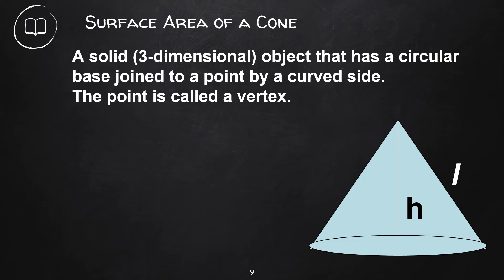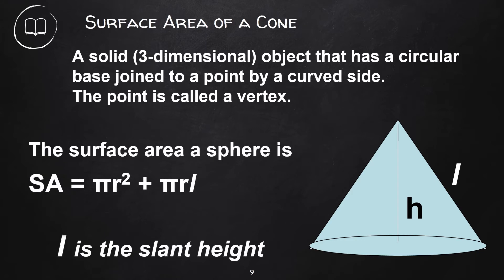The surface area of a cone is πr² + πrl. L is the slant height. H represents the height of the cone. The height of a cone is from the vertex perpendicular to the center of the base.